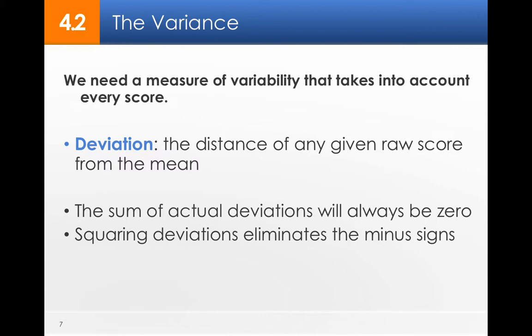When you sum up all the deviations, they should come to zero because you'll have some to the left and some to the right. So what we do is then we square those deviations to eliminate the minus signs.